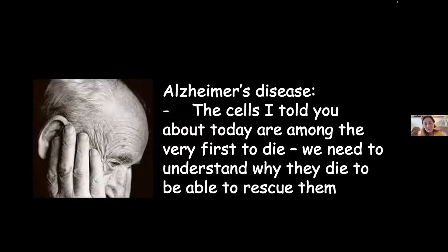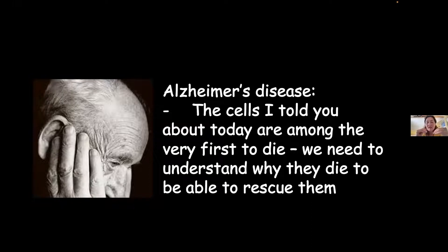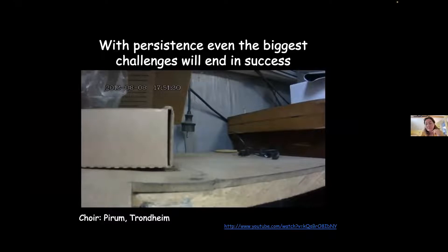What is important to know is that when people get Alzheimer's disease, these cells I've told you about today are the very first to die. That is why we need to understand why these cells die, so that we can rescue them and prevent people from getting the disease. We don't know how to do that yet, but we think it is possible.